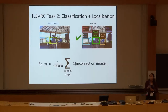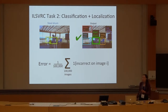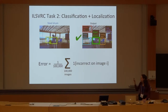And so to evaluate on this task, we compute the error, which is, again, the average over 100,000 images of the indicator function of whether the output is incorrect.